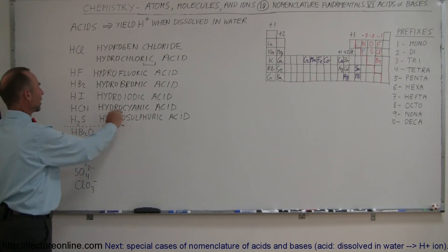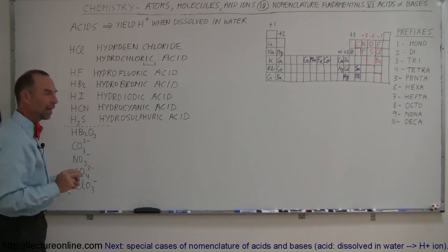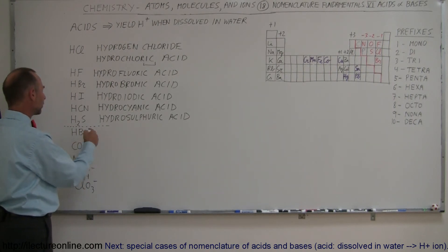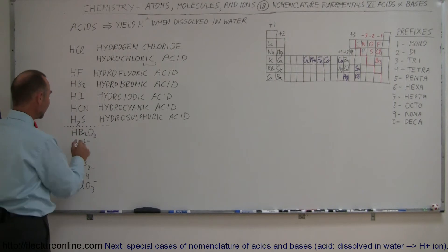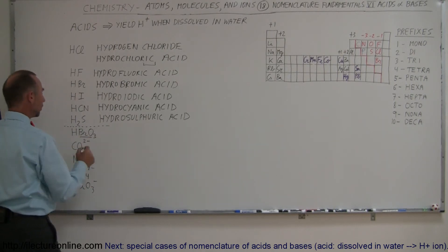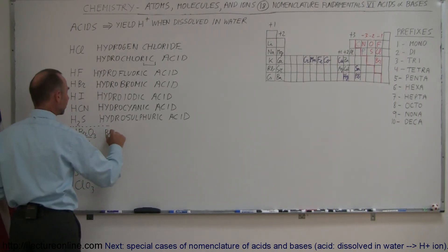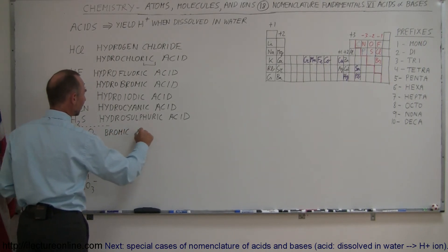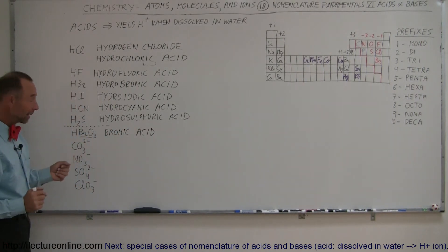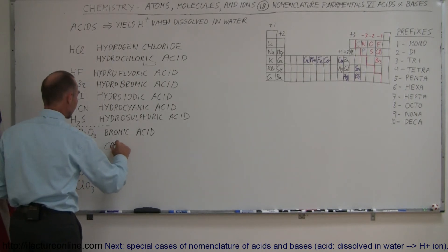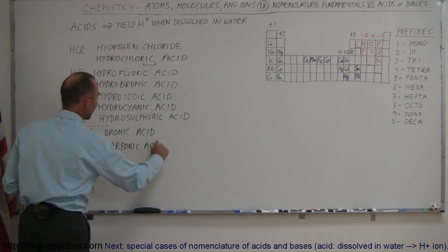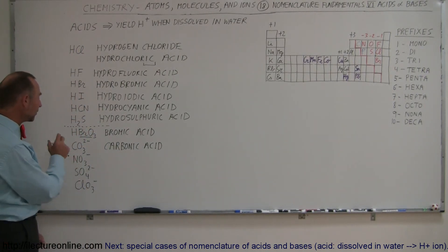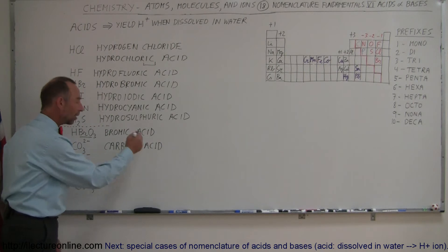Now we have something different. This here is not called 'hydrobromatic acid' or anything like that — this is the bromate ion, so we call this bromic acid and we drop the 'hydro' from the name. Here we have the carbonate ion, so we call that carbonic acid. Again, we do not use 'hydro' in front. When we have these kinds of ions, we simply take the name of the ion, add '-ic' to it, and call it an acid.